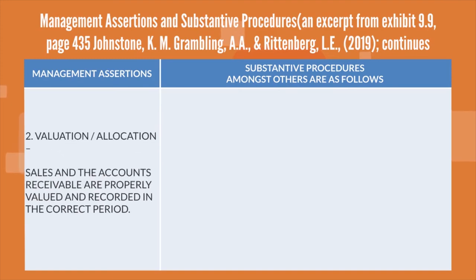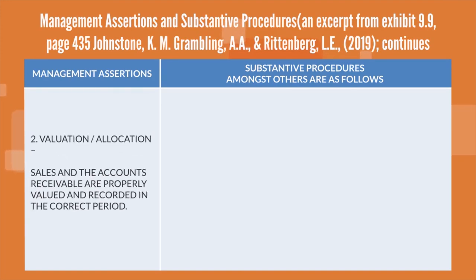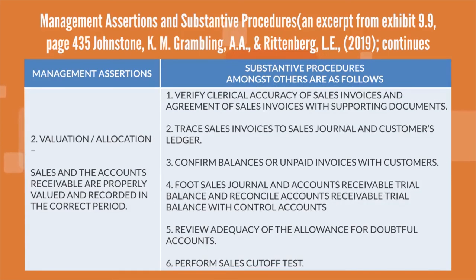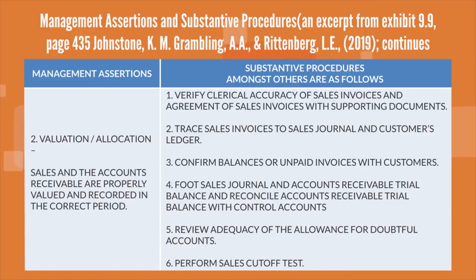In terms of accounts receivable, the management assertion is valuation and allocation. The substantive procedures are as follows: first, verify clerical accuracy of sales invoices and agreement of sales invoices with supporting documents; second, trace sales invoices to the sales journal and customers' ledger; third, confirm balances or unpaid invoices with customers; fourth, foot the sales journal and accounts receivable trial balance and reconcile accounts receivable trial balance with control accounts; fifth, review adequacy of the allowance for doubtful accounts; and sixth, perform sales cut-off tests.